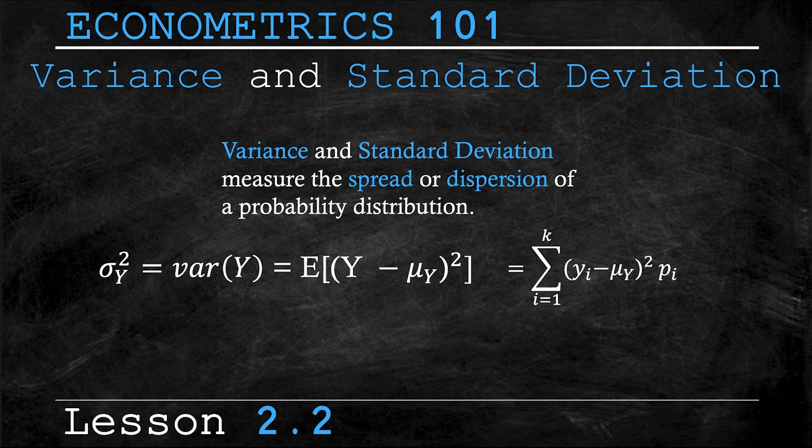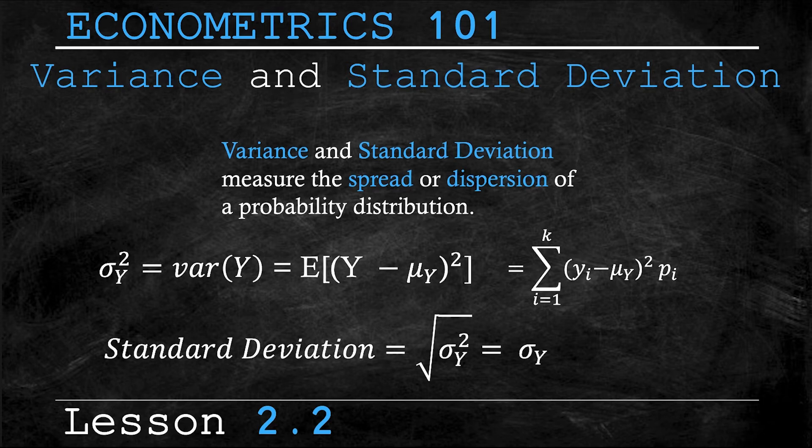Well, the unit for variance would be computer crashes squared. Now that's difficult to interpret, so instead we would take the square root of the variance to get the standard deviation. And the standard deviation is in the same units as the mean, and therefore much easier to understand and interpret.